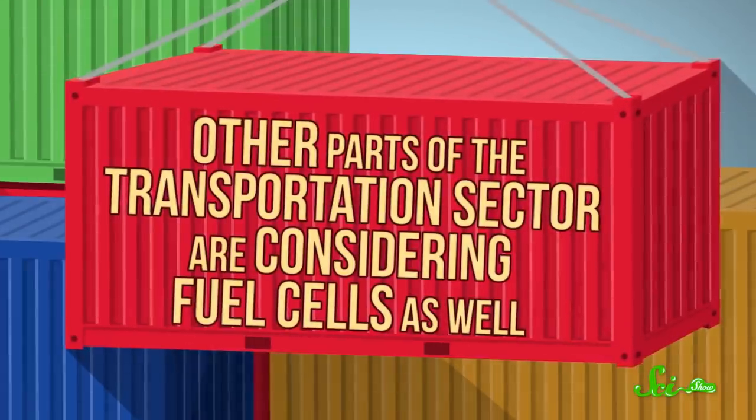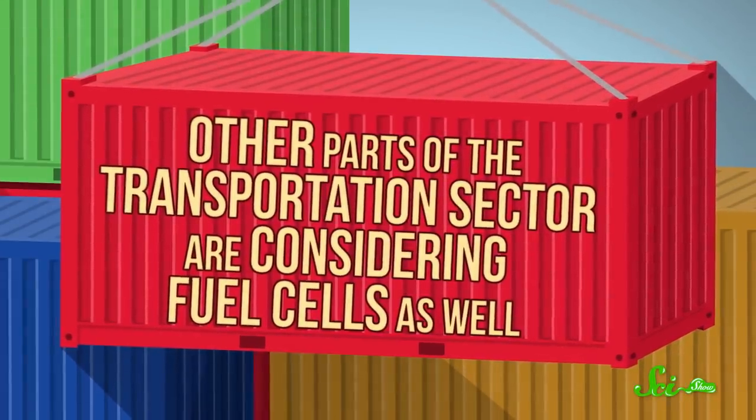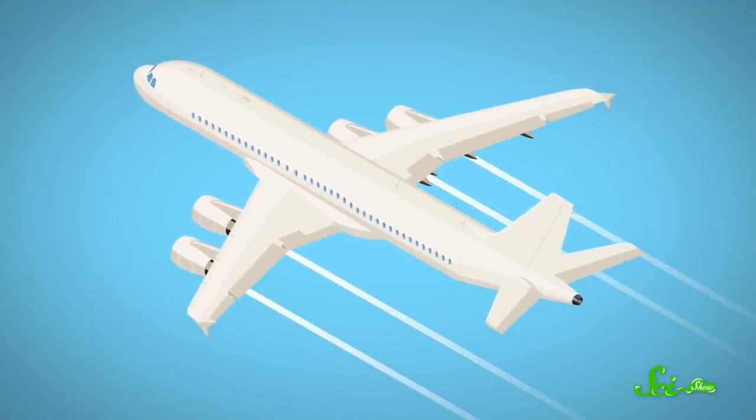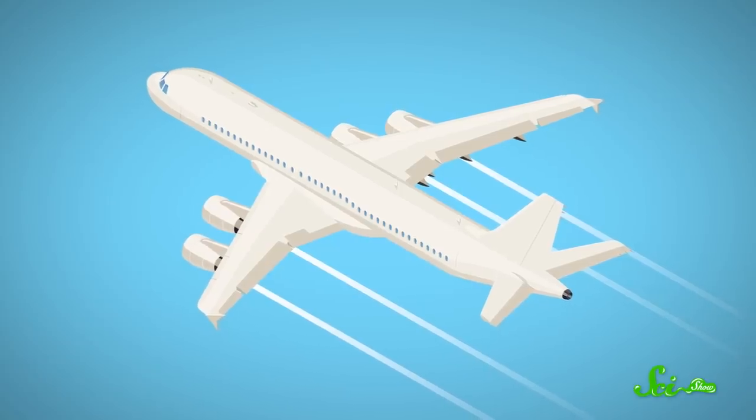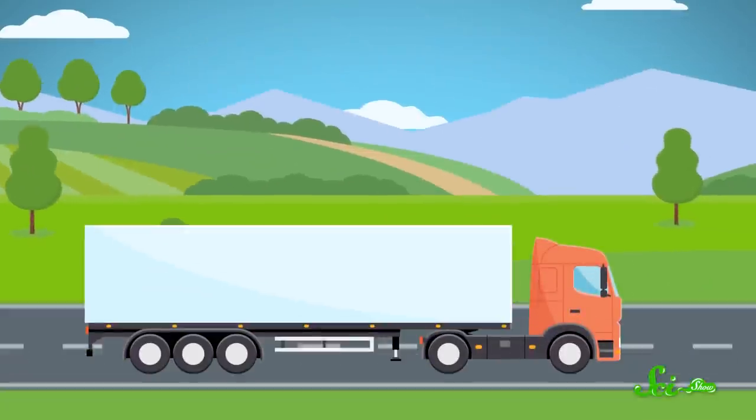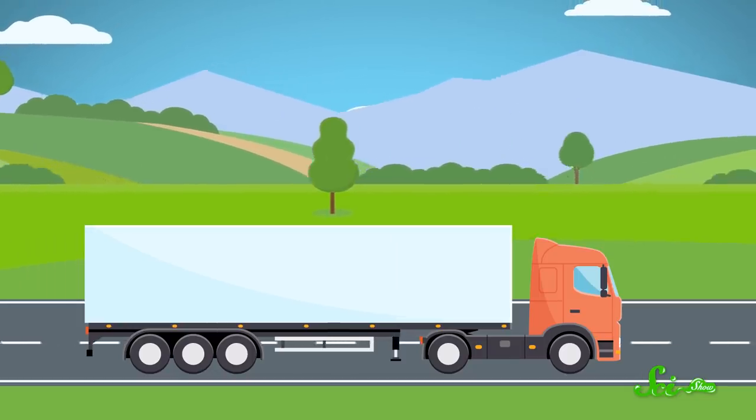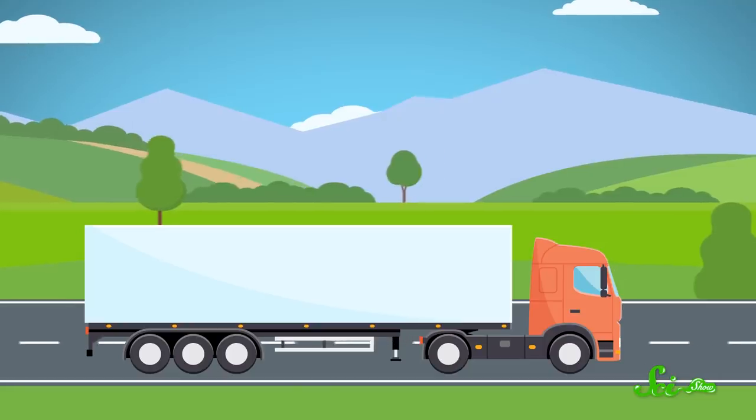Also, as a nice bonus, other parts of the transportation sector are considering fuel cells as well, so these developments wouldn't just help the shipping industry. In particular, because these cells are lighter than batteries, some startups have looked into using them to power small aircraft. And there's a lively debate surrounding batteries versus fuel cells for use in ground shipping, too. There are pros and cons to each. It's a nice debate to have, since either way represents an attempt to help the planet.